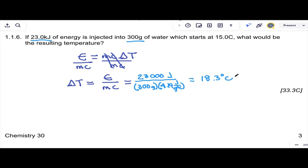Why isn't that the finished answer? Delta T means the change in temperature. So what this is saying is the energy that we pumped in will heat up the water by 18 degrees. It was already at 15 degrees, so the new temp will be 15 plus 18.3, 33.3 degrees is where the water will land.